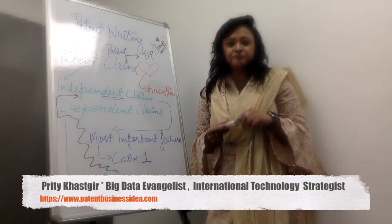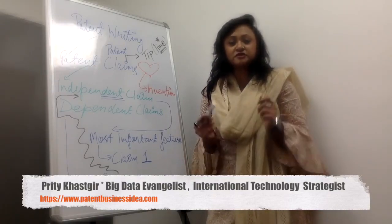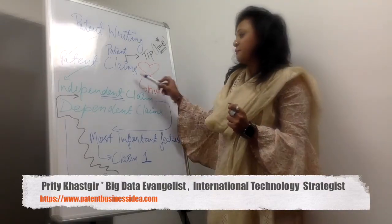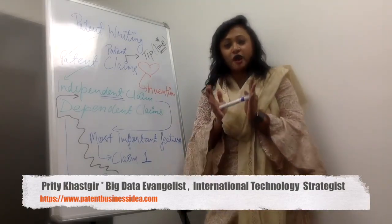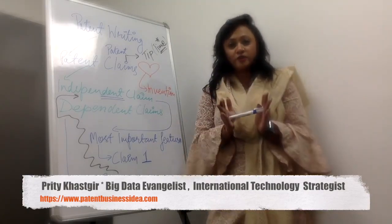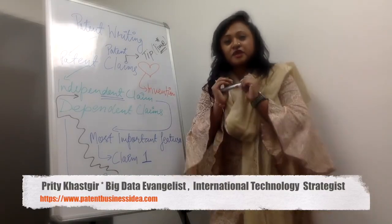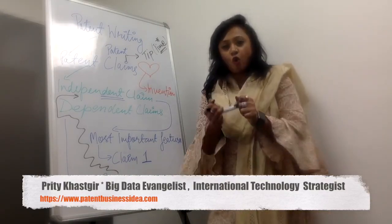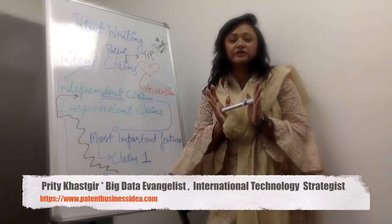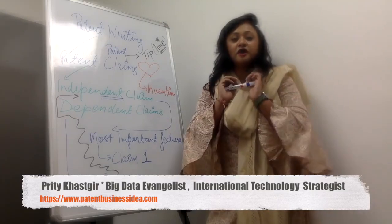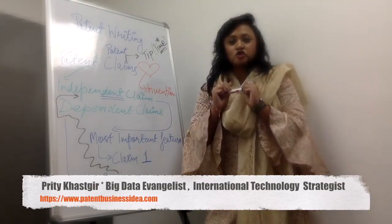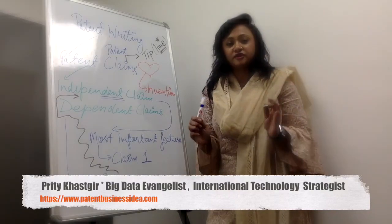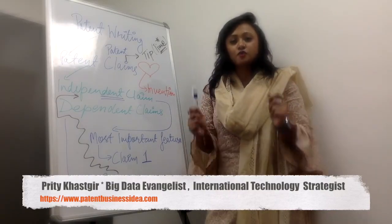The first and foremost tip is: patent claims form the heart of the invention, innovation, or idea for which a patent has been filed. So the scope of the patent claims will define what is the ambit of protection. In that limited time frame, how do you go about understanding how to write patent claims for the patent agent exam?